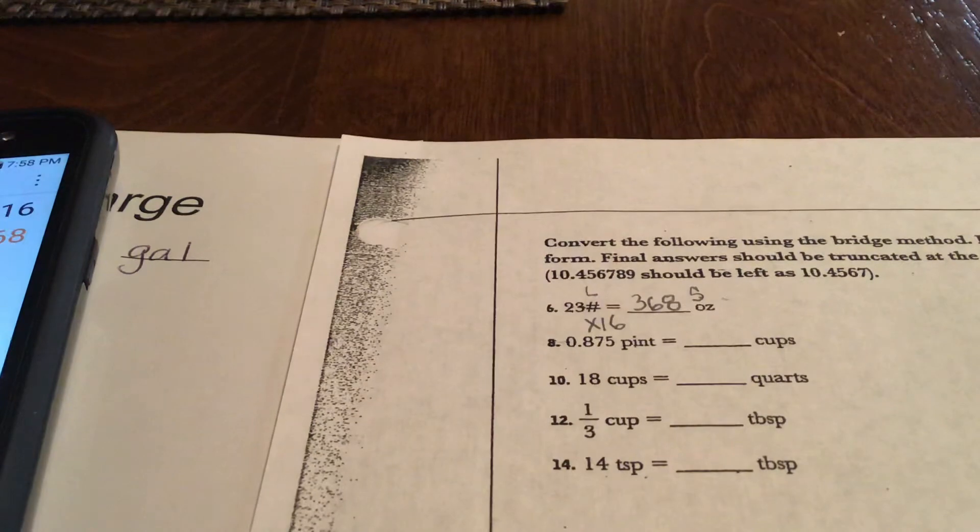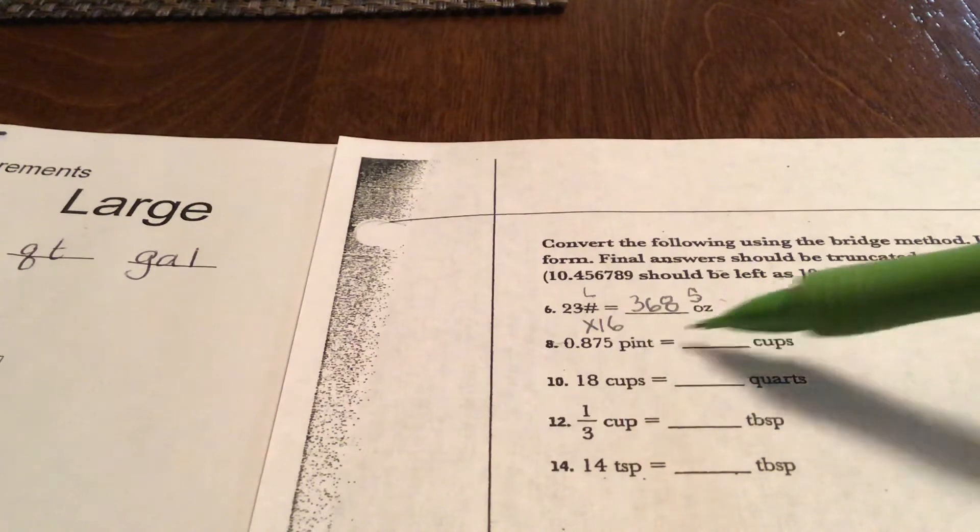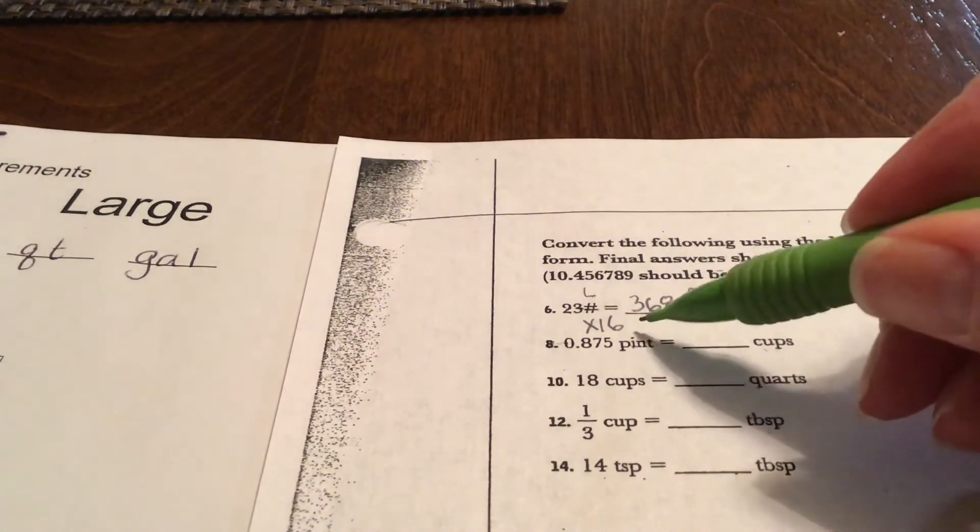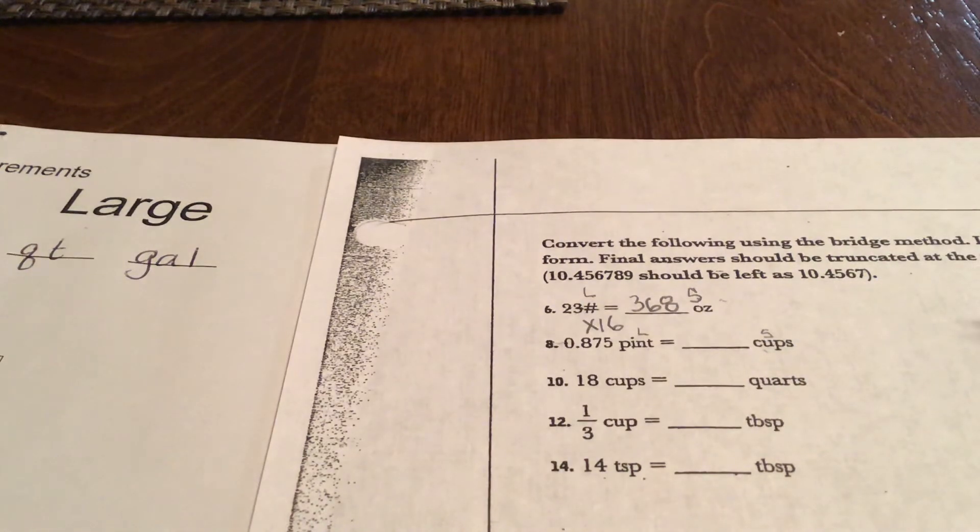Let me do a couple more before we quit the video. In this next example we have pints and cups. A pint is larger than a cup, so I'm gonna put a little L to S.